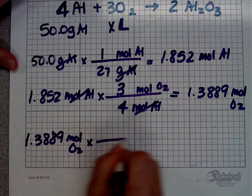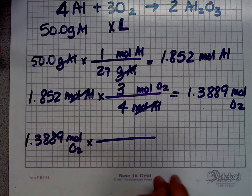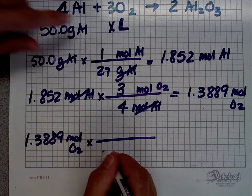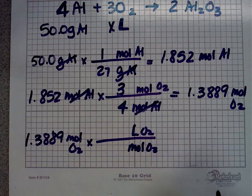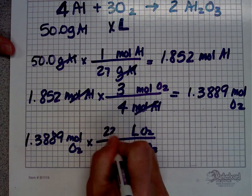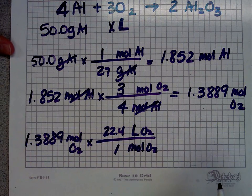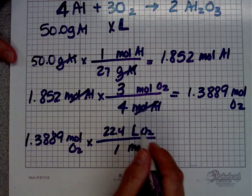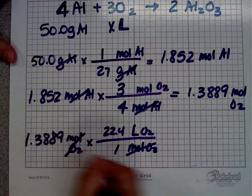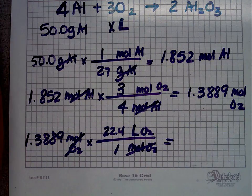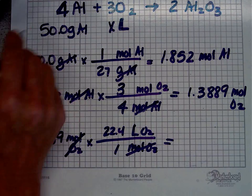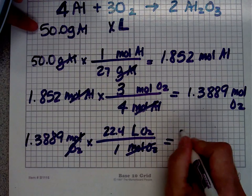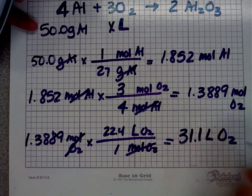1.3889 moles. Why am I not worried about significant figures? Because I'll take all that into consideration at the end. I wanted liters. I can go from moles of O2 to liters of O2. What's that magic number? It's 22.4. For every gas at STP, one mole of oxygen, or one mole of the gas takes up 22.4 liters. I'm going to cancel that. And I take my 1.3889 times 22.4. This is where I'm going to pay attention to my sig figs.